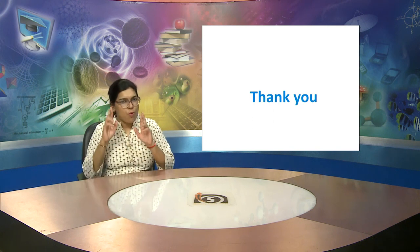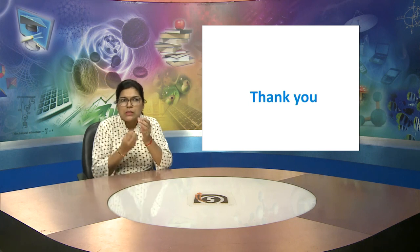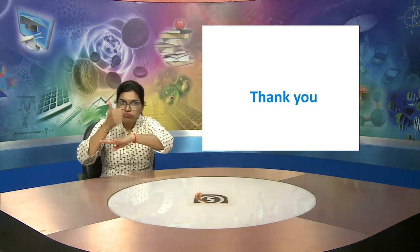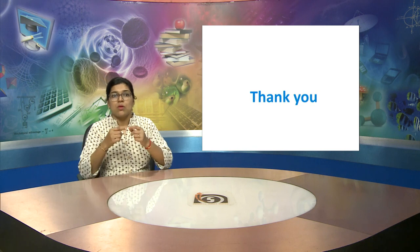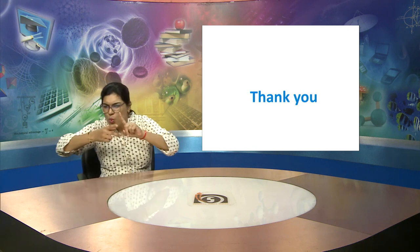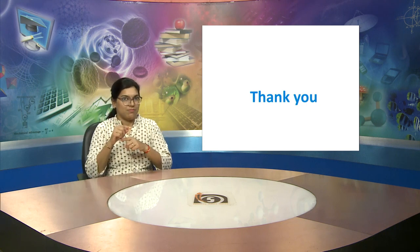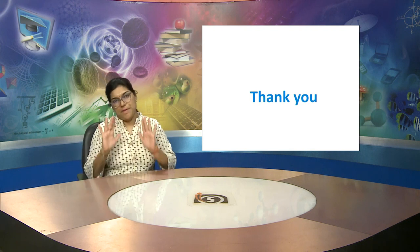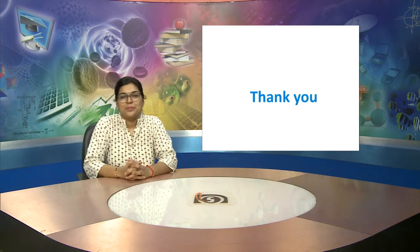So far we have covered many points. We understood about fire, wheels, how the wheel was discovered, how agricultural changes took place, and how industrialization started. All these points were explained in this video. In the next video will be part 5. Thank you, namaskar.